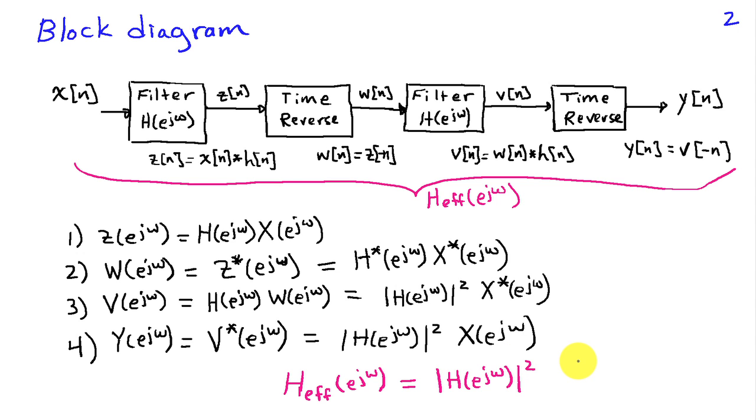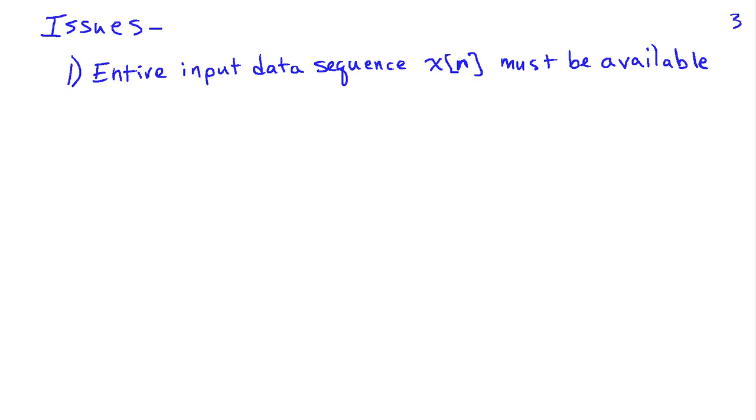So this procedure, because of the two time reversal steps, you can see that it requires the entire data sequence to be available before beginning. One can't do this on the fly as you're collecting data. So that's one of the key issues with using this approach. It's nice to have zero phase, but it does require the entire input data sequence be available or be stored.